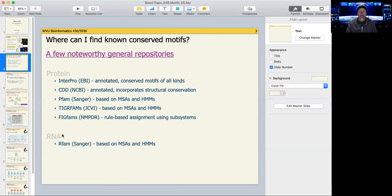There are also motifs for RNA, identified motifs for RNA. RFAM is probably the largest repository for RNA motifs.